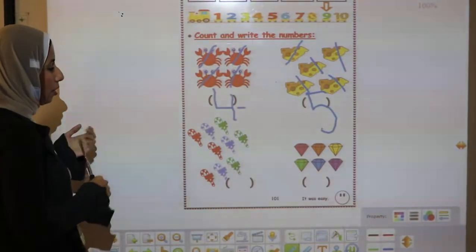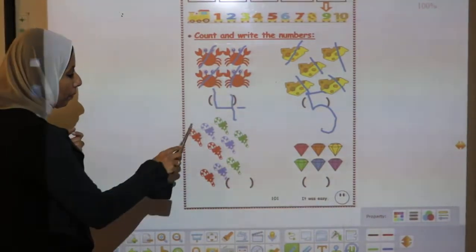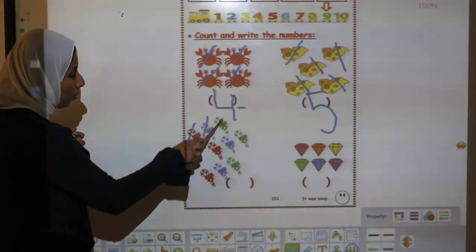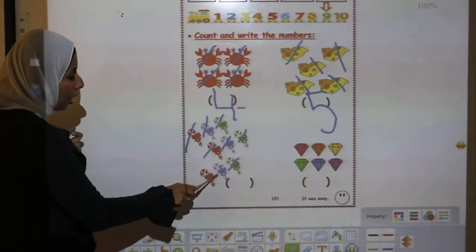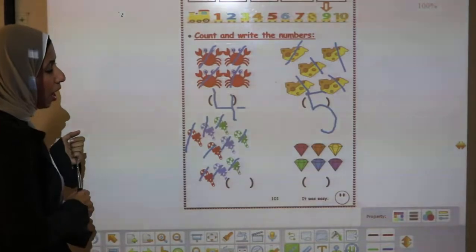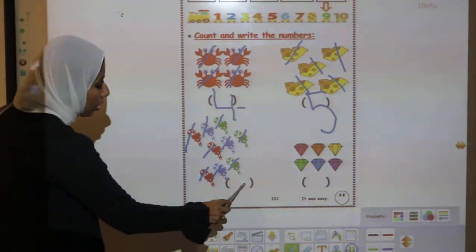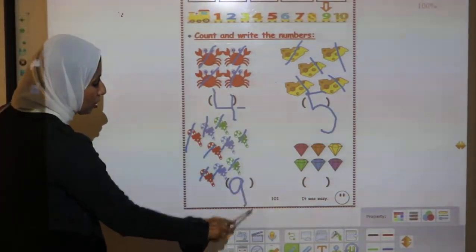Count one more time. 1, 2, 3, 4, 5, 6, 7, 8, 9. How can I write number 9? Semicircle, stick down.